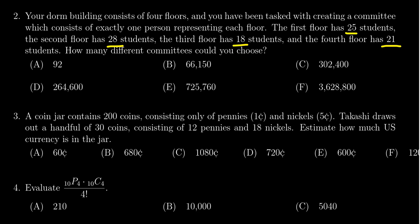So applying the fundamental counting principle, the number of choices we have from the first floor is 25, the number of choices from the second is 28, from the third floor is 18, and from the fourth floor is 21. The number of committees we could make is going to be 25 times 28 times 18 times 21.